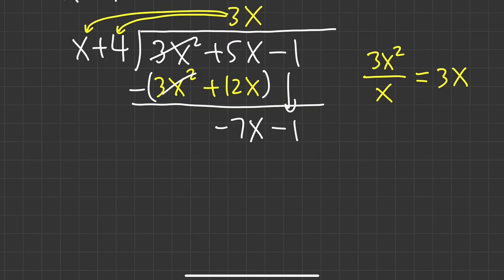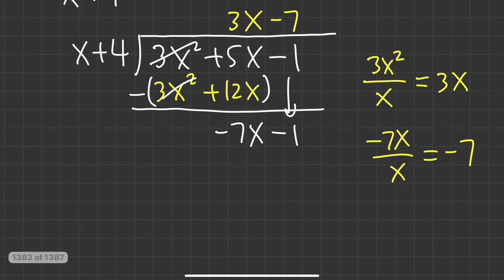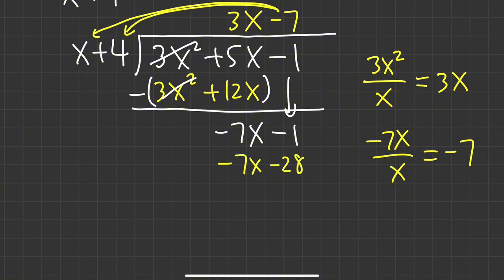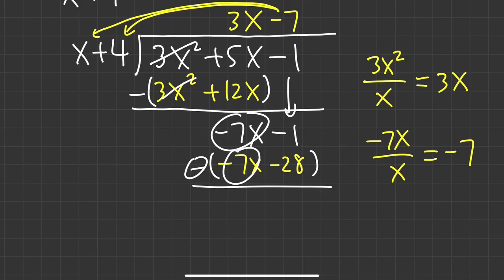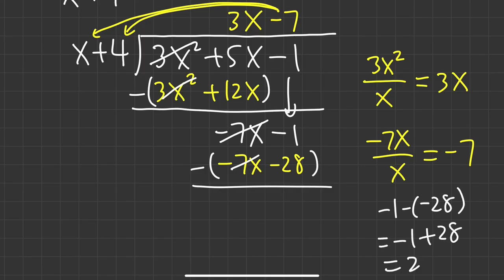We will do the same thing again. Compare the first term from the inside and the first term on the outside: negative 7x divided by x gives us negative 7. Take negative 7 times x, which is negative 7x. Take negative 7 times 4, which is negative 28. Then we subtract. Negative 7x minus negative 7x is 0. Negative 1 minus negative 28 is the same as negative 1 plus 28, which is 27. And this right here is the remainder.